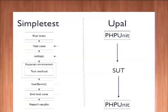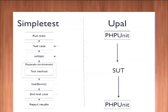On the left-hand side here, we have our current SimpleTest framework and specifically the flow that it does in order to run its tests. The SimpleTest module is the test runner — at least that's what I like to think of it as. It goes through and finds all of the test cases and runs a setup method. The setup method sets up a whole new Drupal, and the test methods run inside of this child Drupal.